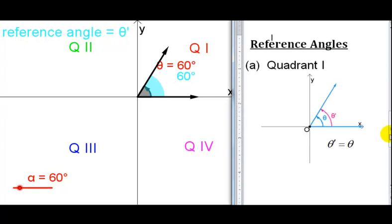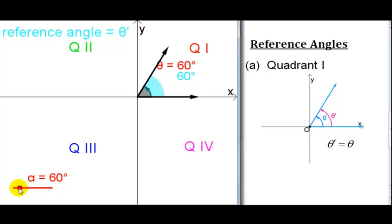In quadrant 1 the reference angle is equal to the angle as long as it is less than one complete revolution. Now let's go back here and make our angle bigger.